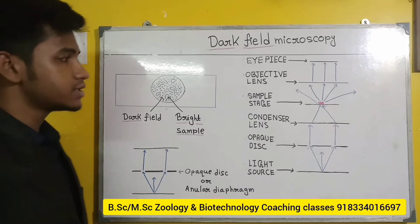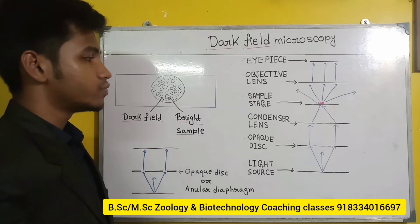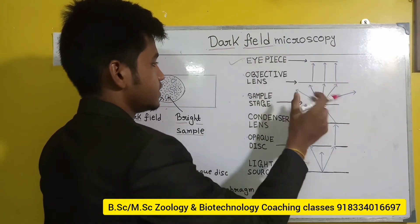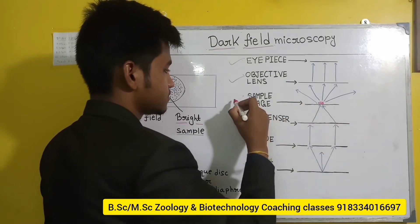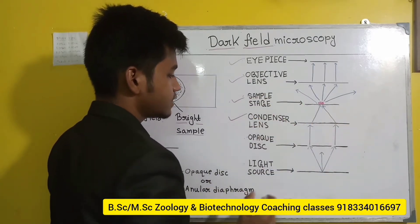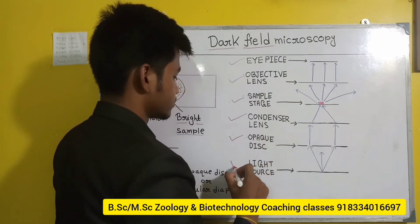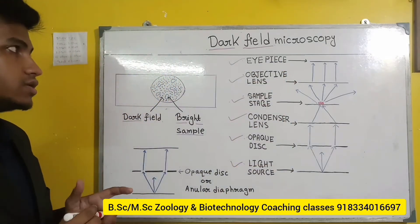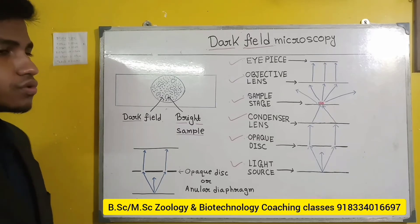Now we will talk about the components present in the dark field microscope. The components are: eyepiece, objective lens, sample stage, condenser lens, opaque disc or annular diaphragm, and light source. These are the important components or instrumentation parts of a dark field microscope.